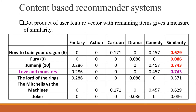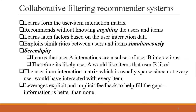One interesting thing to note is that we have no information on action. An interesting question is: does this user like action movies? We don't know. Maybe this person likes action movies, but the movies they looked at just didn't have any action. Using content-based algorithms, we won't be able to discover that. So that leads us directly into collaborative filtering.